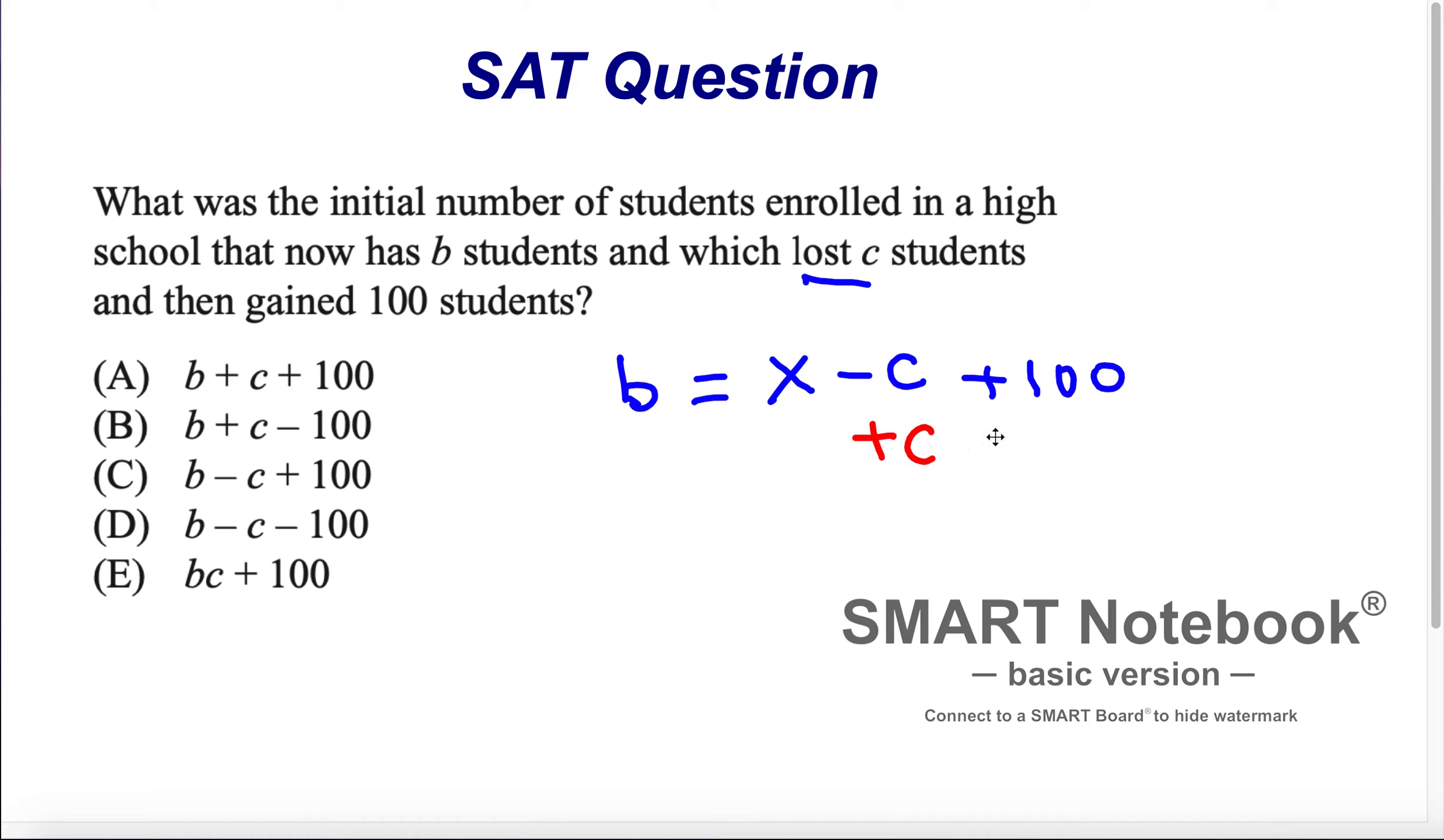Plus C both sides. So this side, I want to isolate x. I want to cancel C's and minus 100, plus C and minus 100 here on this side. So this we can cancel. So x remains by itself, and x is equal to B plus C minus 100.